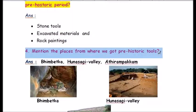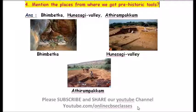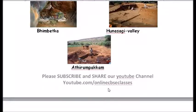Question four: mention the places from where we got prehistoric tools. The answer is Bhimbetka, Hunasagi Valley, and Adhiram Pakkam. Bhimbetka is in central India in the foothills of the Vindhya range, covering Bhopal and parts of Madhya Pradesh. Hunasagi is in the district of Yadgarh in Karnataka. Adhiram Pakkam is in Tamil Nadu, Thiruvallur.